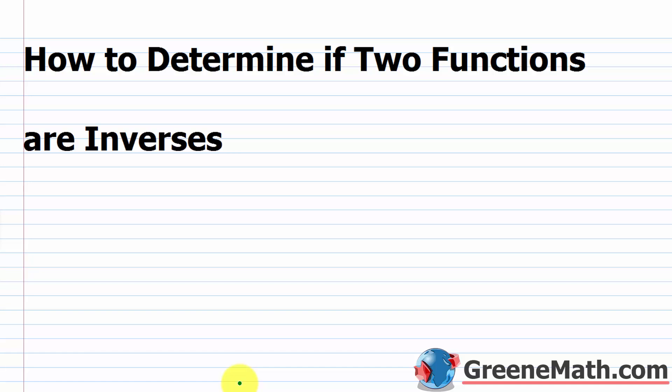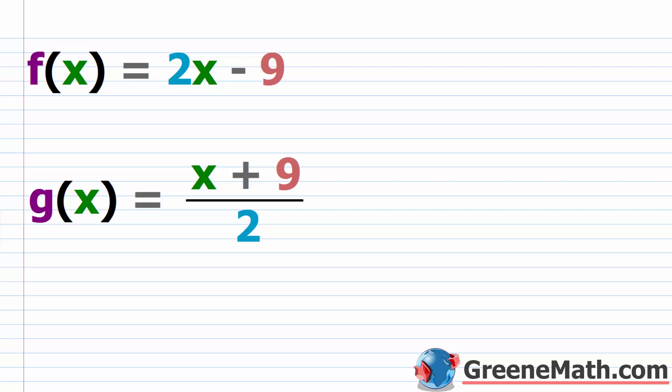In this lesson, we want to talk about how to determine if two functions are inverses. So in the last lesson, we learned how to find the inverse of a one-to-one function. Basically, we swap the x and y values, and then we just solve for y. And then we use our special notation f inverse of x. So in this section, what I want to do is show you how to determine if two functions are inverses.